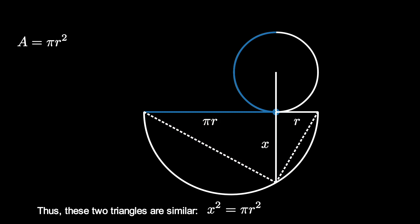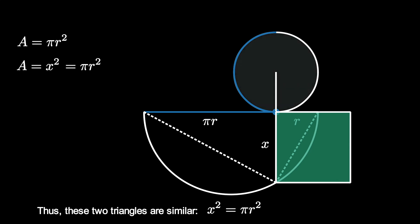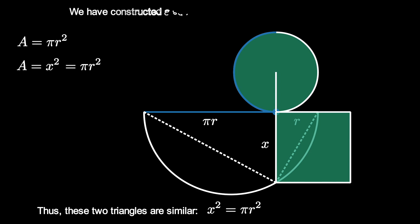We can also use the half chord to create a square with side length x, so that its area is A equals x squared. But x squared equals pi r squared, and thus we have constructed a square with the same area as the given circle. That is to say, we have squared the circle.